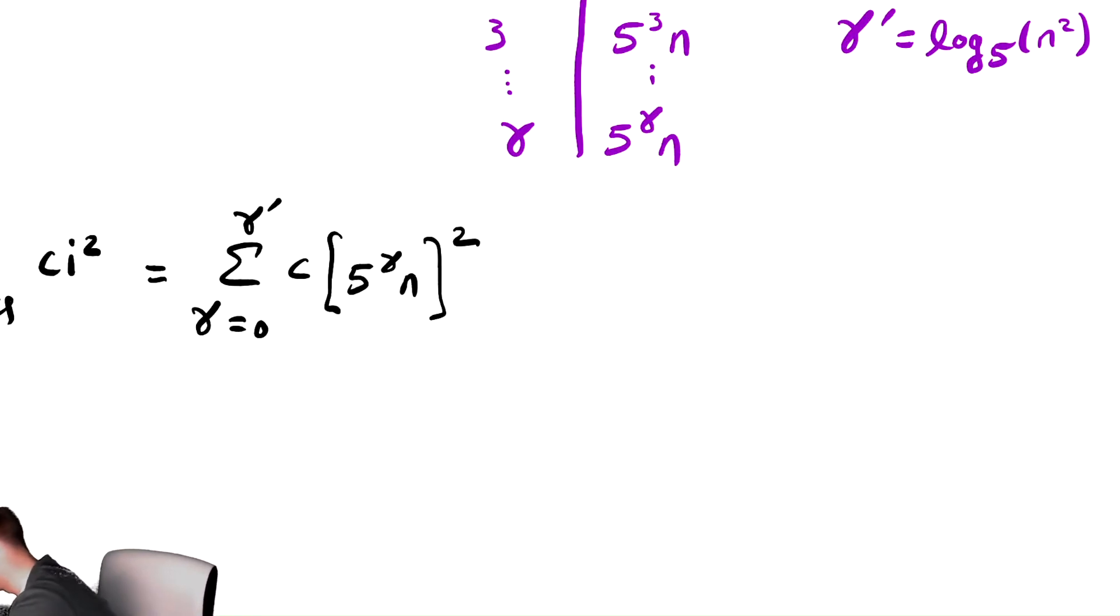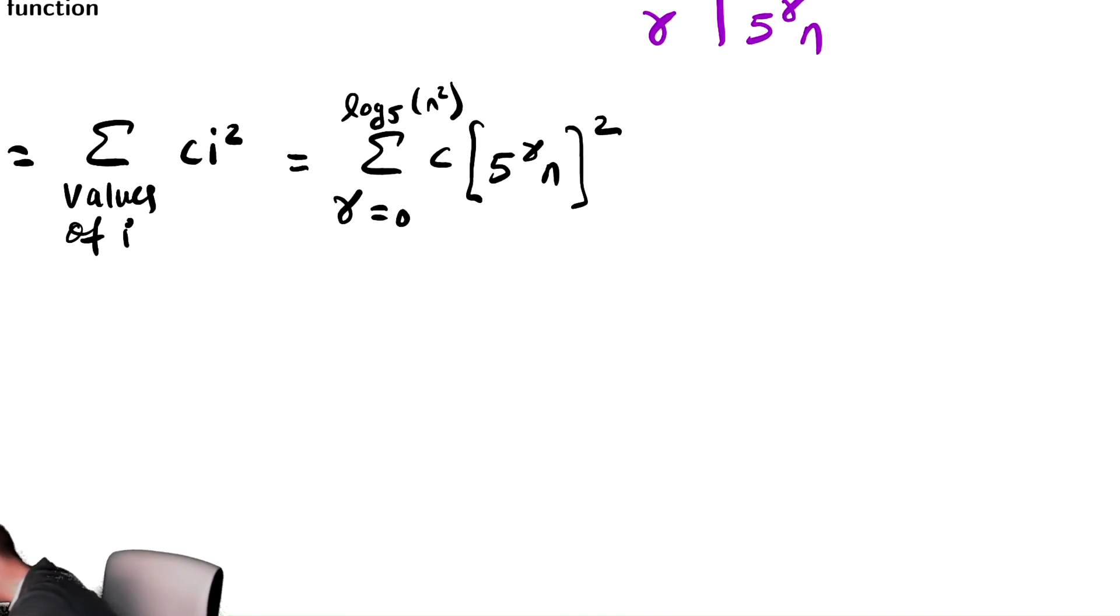And the whatever operations were being performed on i are still being performed on that expression. Just as we've done a couple of times by now, we're going to replace gamma prime with log base 5 of n squared. We now have a summation to analyze, we're theoretically now out of while loop territory, and we're in our much more comfortable summation analyzing realm of existence. So we need to do whatever algebra we can here. We're going to factor out the c, maybe not yet, let's actually hold off on that.